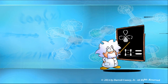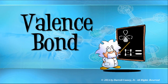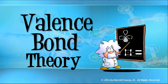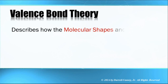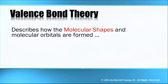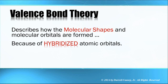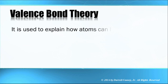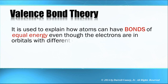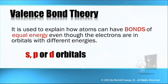But with quantum mechanics, we were able to introduce the valence bond theory. The valence bond theory described how the molecular shapes and molecular orbitals are formed by the hybridization of the atomic orbitals. This was used to explain how atoms can have bonds of equal energy, even though the electrons are in orbitals with different energies, such as s, p, or d orbitals.